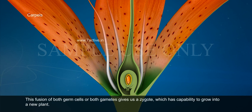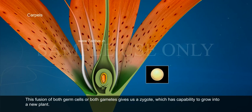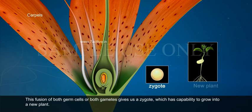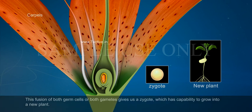This fusion of both germ cells or both gametes gives us a zygote which has the capability to grow into a new plant.